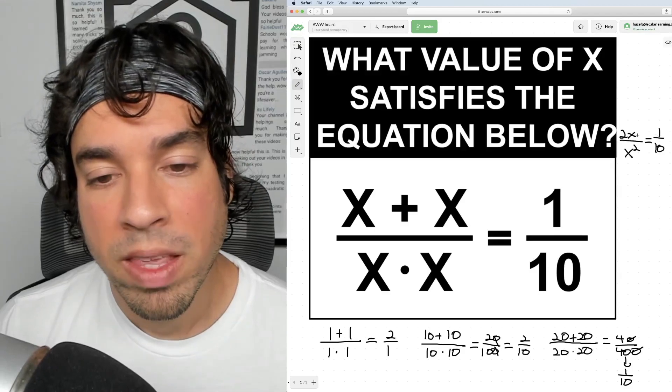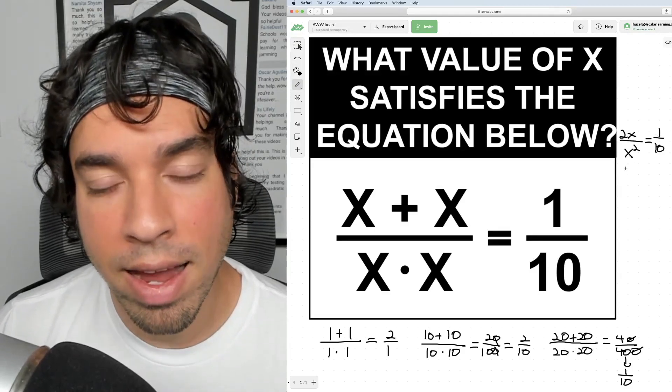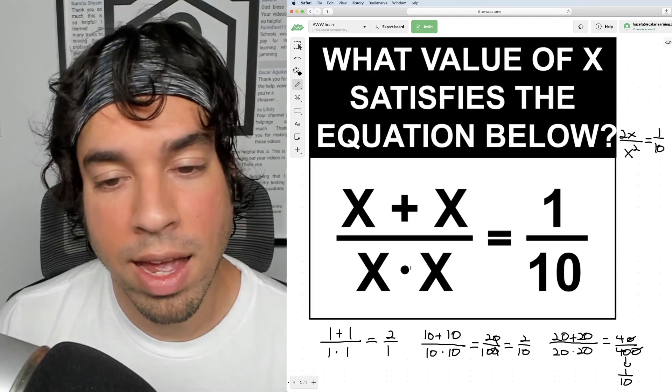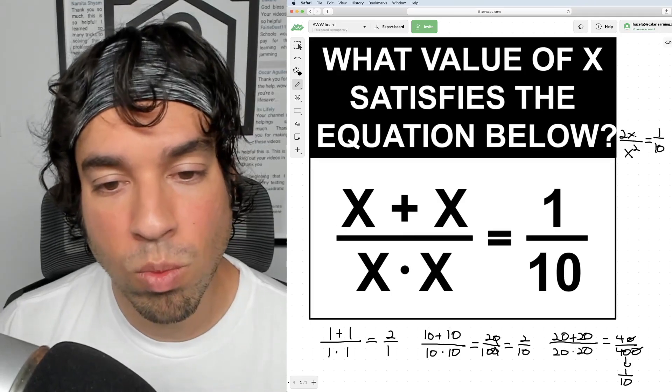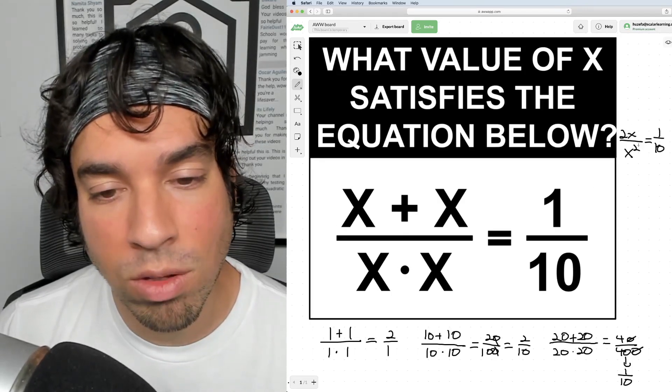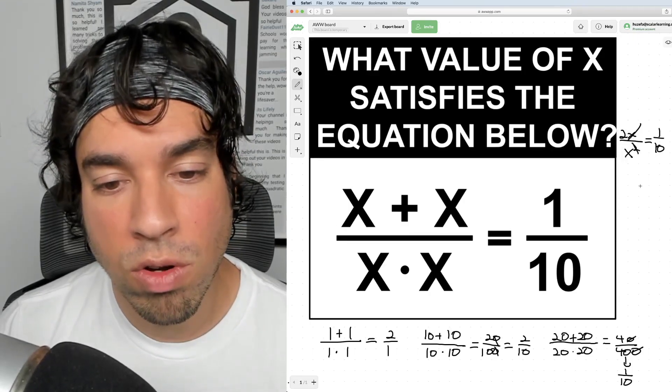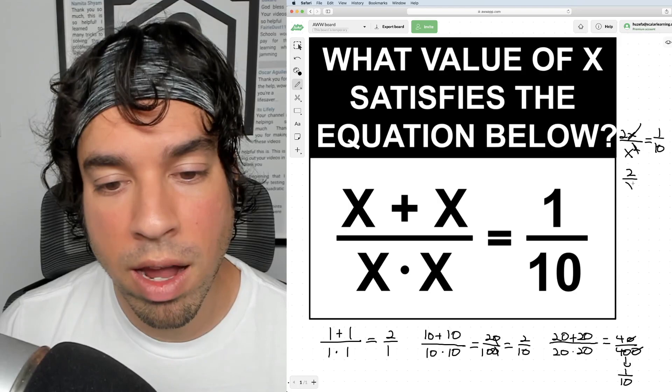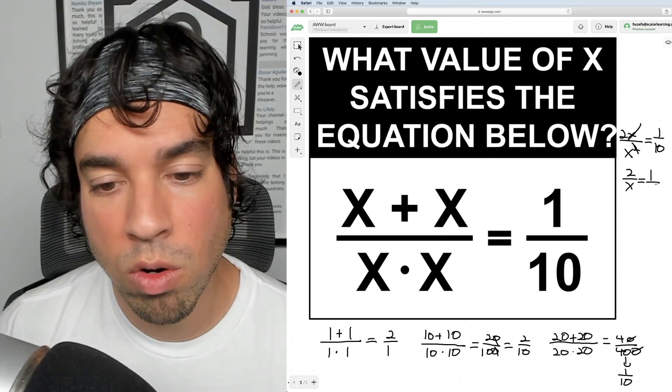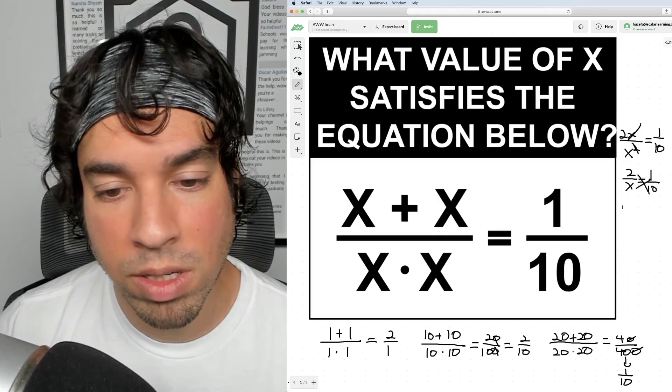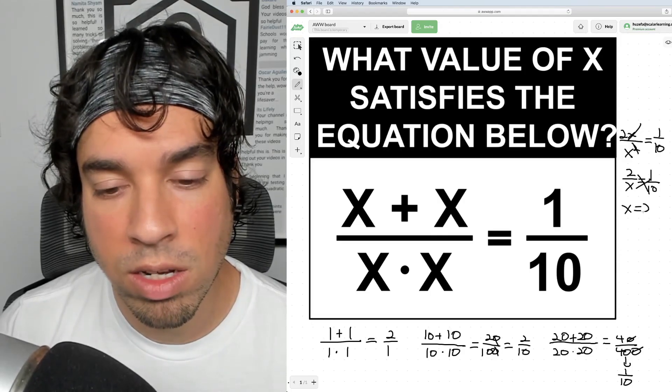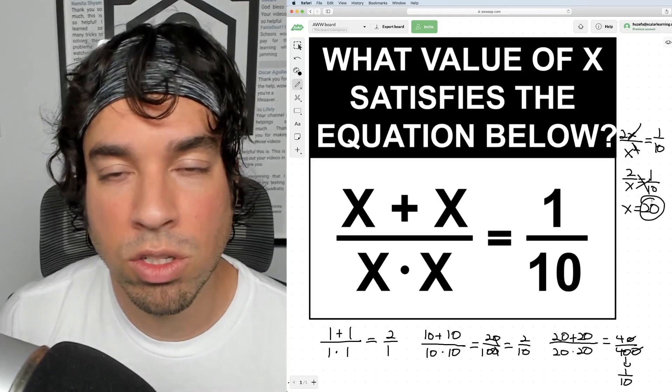Now what we can do is—I can see I've got an x and an x² on the bottom. Remember, an x² is just x · x, like we've got written out there. So what can happen is one of those x's cancels out with one from the numerator. So now I've got 2/x = 1/10, and I can cross-multiply to solve: 1 · x = x, and 2 · 10 = 20. And we've got our solution.